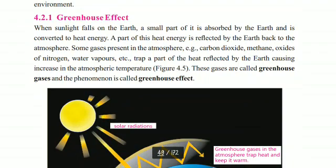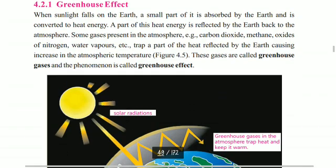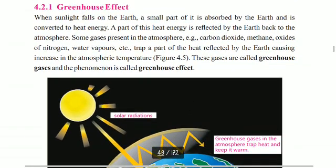First of all, the greenhouse effect. When light falls on the earth, a part of it is absorbed and converted to heat energy. A part of this heat energy is then reflected back by the earth to the atmosphere, and some of it is reflected back again by the atmosphere.